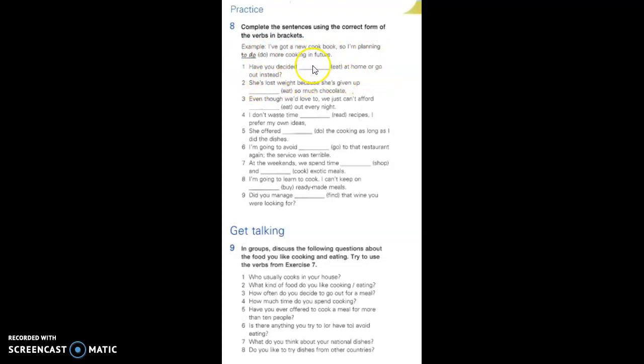So you could show them the example and then together get them to do number one. Have you decided eat at home or go out instead? So decide, is that followed by an infinitive or an -ing form? It's followed by an infinitive. So they need to put the verb eat in the infinitive. Have you decided to eat?